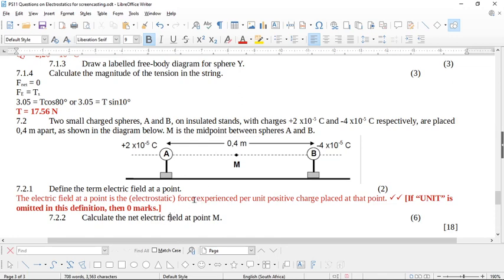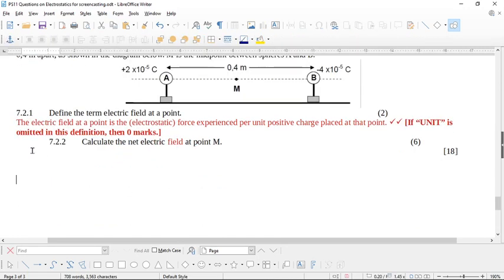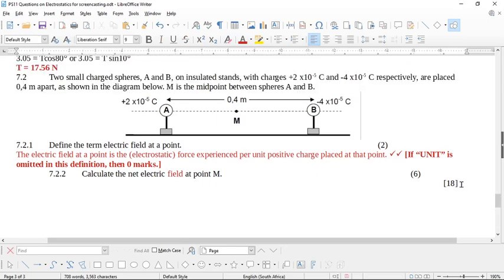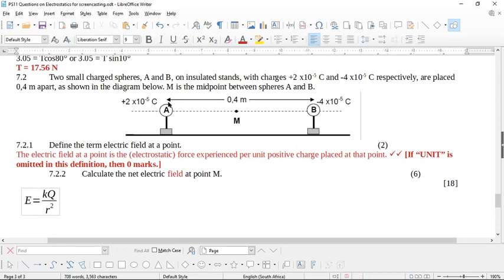Now it says to you, calculate the net electrical field at point M. So, when we calculate the field, we must use the field formula. So there's two ways to do this. You can calculate the net force and turn it into a field, but it's way better just to use this formula. The field equals E equals KQ over R squared. So what we have to do now, first of all, there's a field from A and there's a field from B. So to calculate the net field, we have to know what is A doing at M, what is B doing at M, and then to find the net, we have to add them together, obviously assuming a direction.